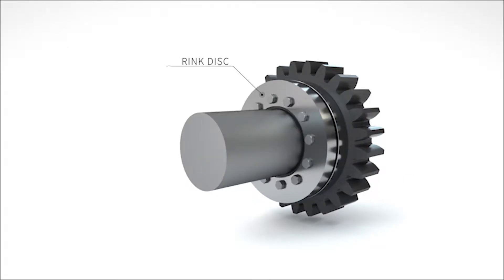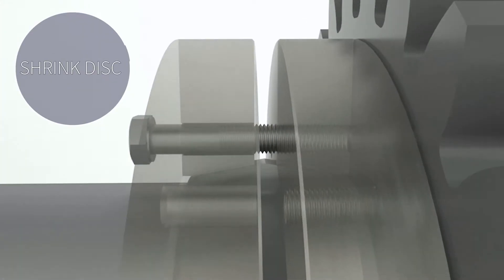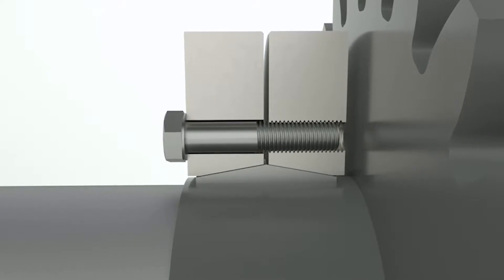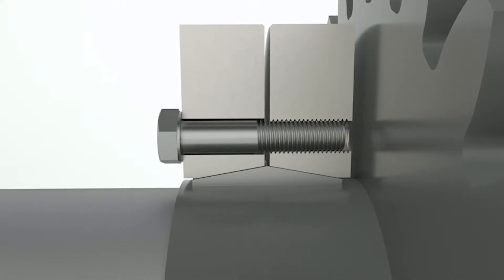Your second keyless alternative is the shrink disc. Once you place this device over the hub and shaft, simply tighten the locking screws. This draws the disc's outer and inner thrust rings together, compressing the hub tightly around the shaft.